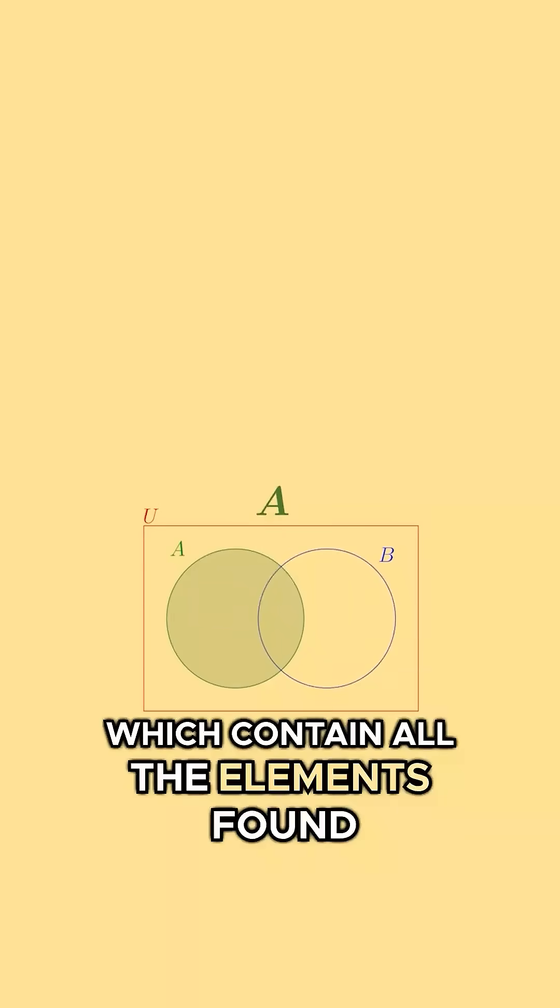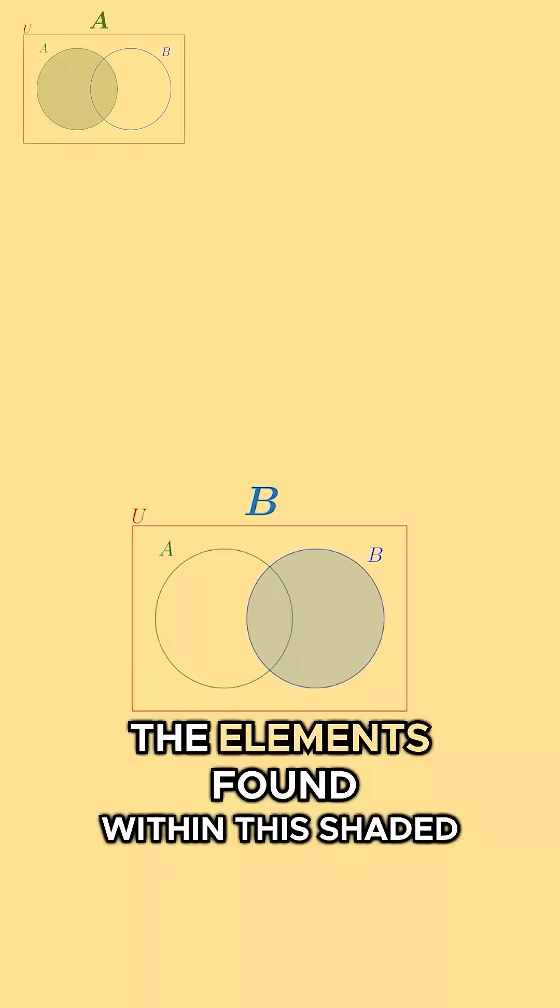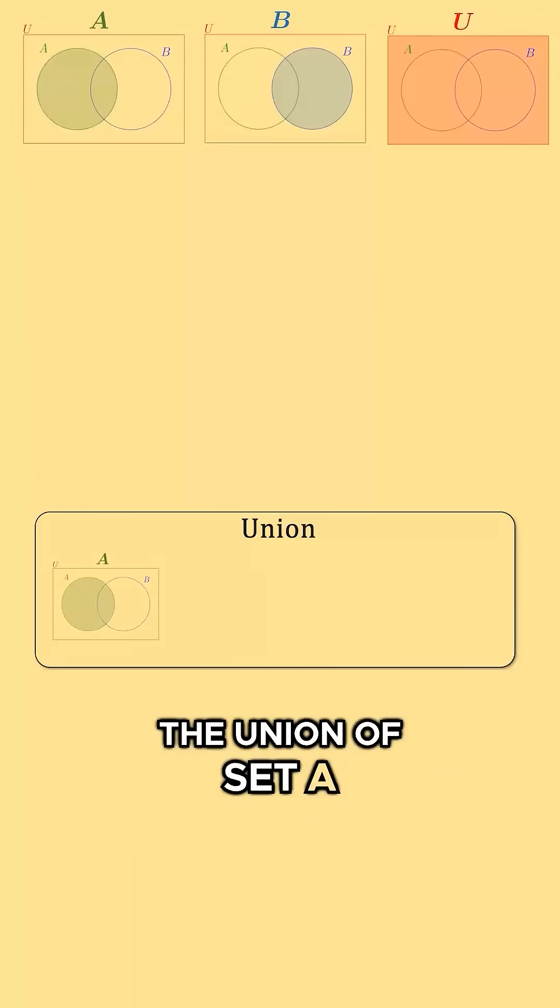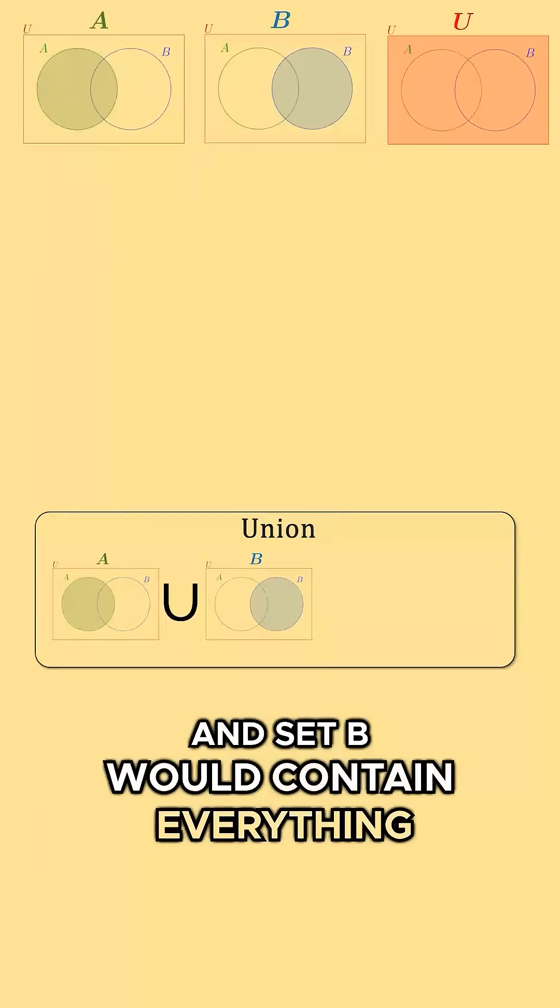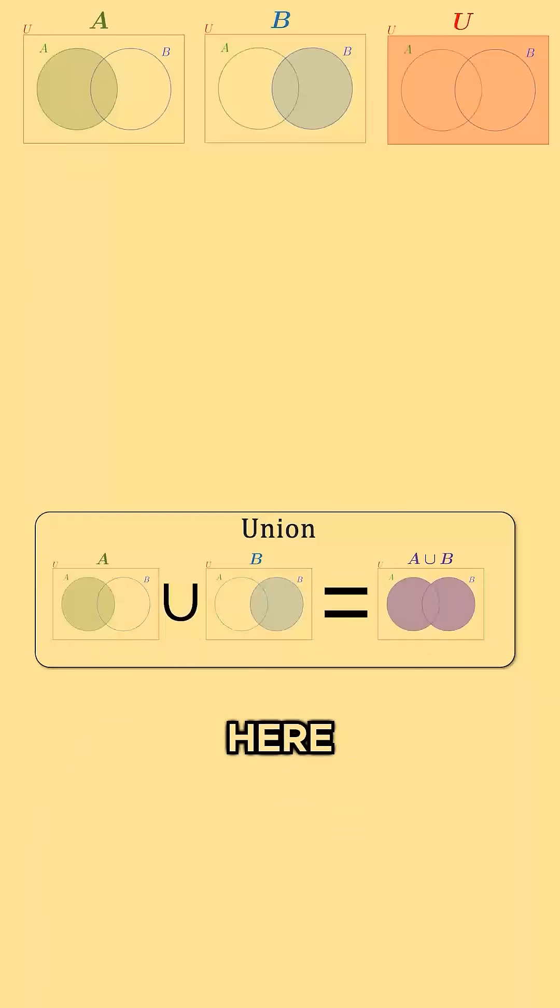Set A would contain all the elements found within this shaded circle. Set B would contain all the elements found within this shaded circle. The union of set A and set B would contain everything in both circles, which ultimately ends up being this entire area here.